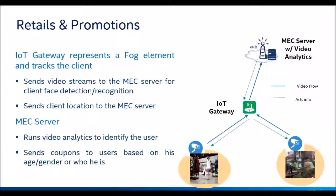We can do more with this. Based on the customer demographics, customers can receive coupons on their cell phones. An IoT gateway takes video streams, performs age and gender recognition — which already exists in some stores — and sends the statistical information to the MEC server. The MEC server can then push targeted coupons back to the customer based on their age and gender.